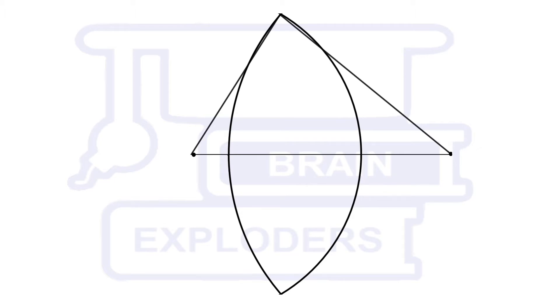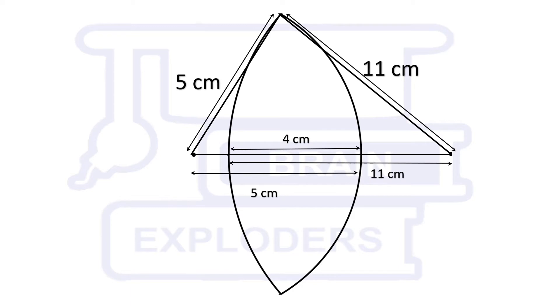Radii of the spheres are 5 cm and 11 cm respectively and thickness of the shape is 4 cm. Now calculate the length of the third side of the triangle. This side is divided in three parts due to this shape.